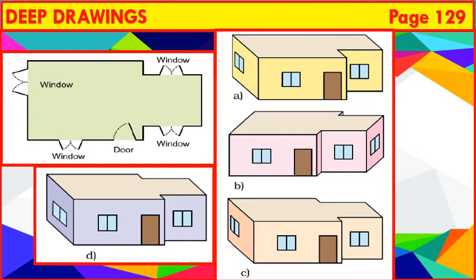So, we use deep drawings to show the length, width and height of a house. Children, this is a floor map and these four are deep drawings. Now, the question is, out of these four deep drawings, which one is Vibha's house? Children, compare this floor map with all four deep drawings.